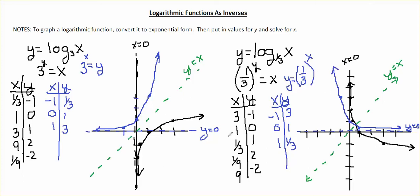In both examples, the black graph is the graph of our logarithm, and you'll be doing that in your homework. Make sure you know how to graph a logarithm by converting it to exponential form, plugging in values for y instead of x, and then plotting. Remember, for a logarithm you always have a vertical asymptote at x = 0, as long as you're not moving the graph around.